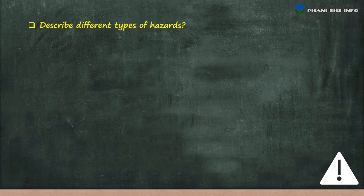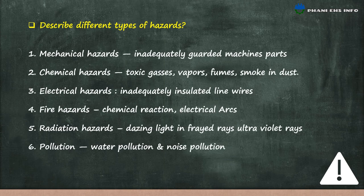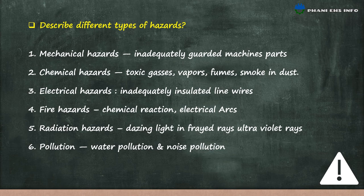Describe different types of hazards. Mechanical hazards: inadequately guarded machine parts. Chemical hazards: toxic gases, vapors, fumes, smoke and dust. Electrical hazards: inadequately insulated live wires. Fire hazards: chemical reactions, electrical arcs. Radiation hazards: dazzling light, infrared rays, ultraviolet rays. Pollution: water pollution and noise pollution.